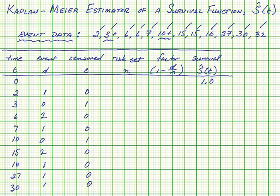Now we'll start with the risk set. The risk set starts with all the subjects before they fail — so there are twelve subjects total. The risk set starts at twelve. And then at time two, one of them fails. So the risk set is still twelve at that point.